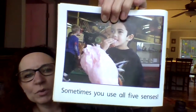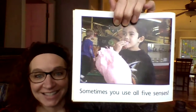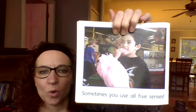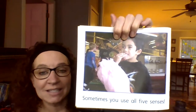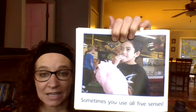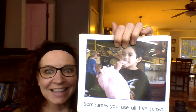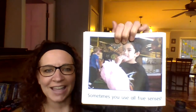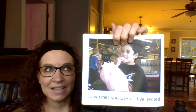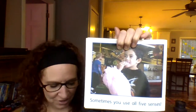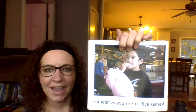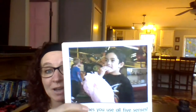Sometimes you use all five senses. Think about how the boy eating cotton candy is using his senses — he's tasting it, he can smell the cotton candy, he can see the cotton candy, he can touch the cotton candy. He probably could also hear it being made, because they make it on a machine that makes a sound, so he might have heard it too.